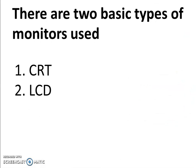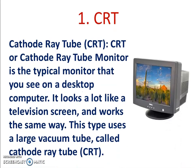There are two basic types of monitors in use: first is CRT and LCD. CRT means cathode ray tube. A cathode ray tube monitor is the typical monitor that you see on a desktop computer. It looks a lot like a television screen and works the same way. These types of monitors use a large vacuum tube called a cathode ray tube.